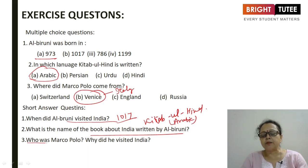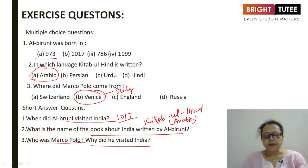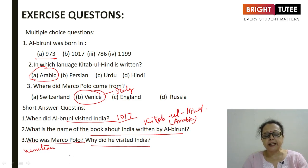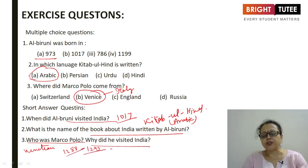Who was Marco Polo? He was a Venetian traveller and merchant from Venice, a place in Italy. When did he visit India? He visited India in 1288 and 1293. The place he visited was South India.